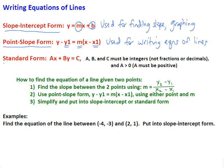The third form is the standard form, which looks like ax plus by equals c. a, b, and c are integers — remember, an integer is not a fraction or a decimal. We also require that the leading coefficient of x, which is a, must be positive. I call this the pretty form. Unfortunately, it's not very useful — it's hard to tell what the slope is and hard to graph from as well.